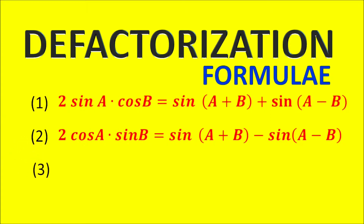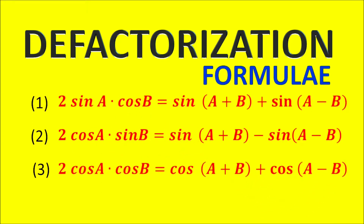Third Formula: 2 cos A into cos B is equal to cos(A plus B) plus cos(A minus B).